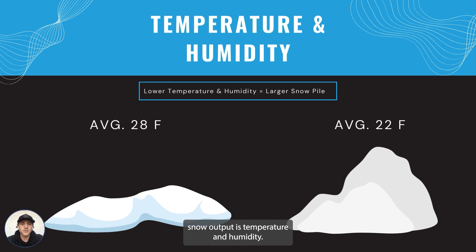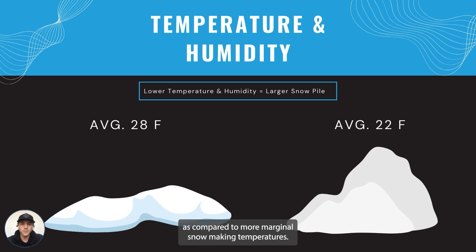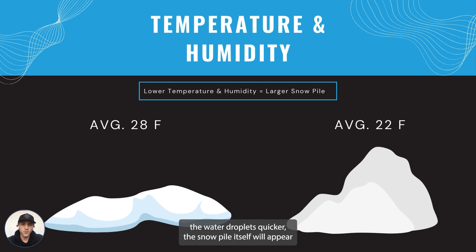The second factor that's going to affect snow output is temperature and humidity. Lower temperatures and lower humidities will produce larger snow piles. The snow pile produced with lower temperatures and lower humidities will have a greater volume compared to more marginal snowmaking temperatures, since colder temperatures are able to freeze the water droplets quicker, making the snow pile appear larger as there's more air volume inside the snow.